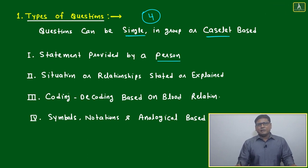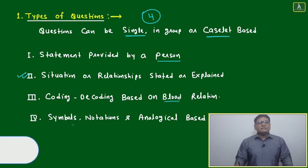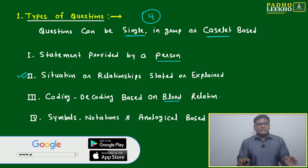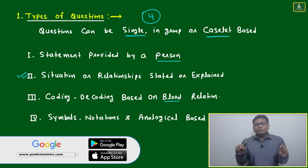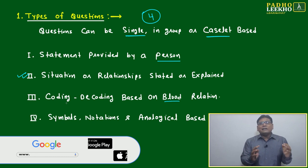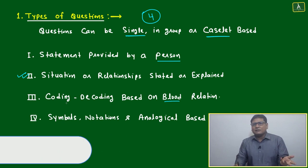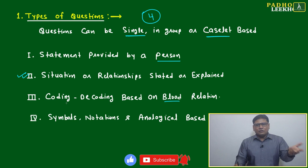The second type is situation or relationships stated or explained. Most of the questions will fall into the second category. Third is coding-decoding based blood relations. Don't think it is only coding-decoding; it's coding-decoding based on blood relation because coding-decoding as a general separate chapter is there as a small chapter in logical reasoning, which I will discuss in the next folder.